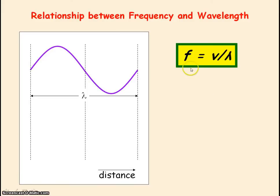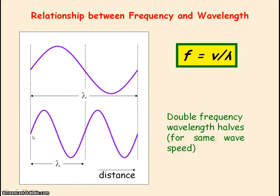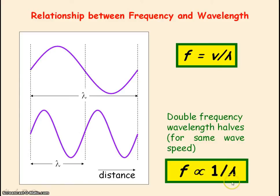This equation shows the relationship between frequency and lambda for a wave travelling in a certain medium where wave speed is constant. You can see that frequency is inversely proportional to wavelength. Here we have a complete wave of wavelength lambda, and if we were to double the frequency, the wavelength would halve. So frequency is inversely proportional to wavelength when wave speed is constant.